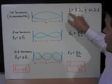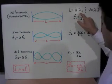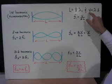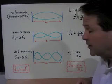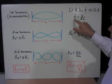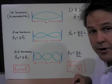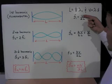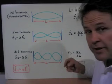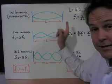If we take that relationship between L and lambda, the wavelength, and we combine it with the velocity equation, velocity is the product of wavelength and frequency. We arrive at the frequency equation for a string, saying that the frequency of the first harmonic is equal to the velocity of the wave through the string, divided by two times the length of the string.